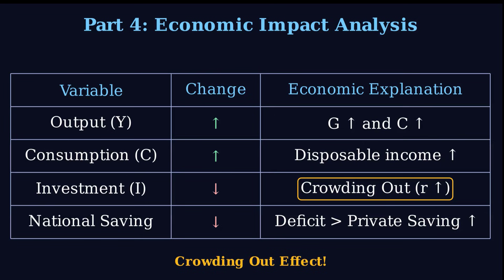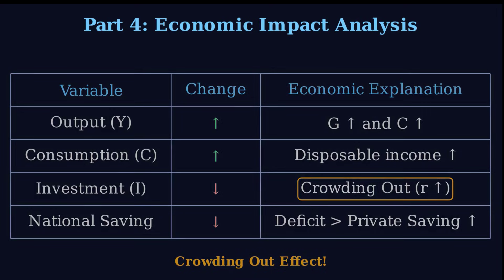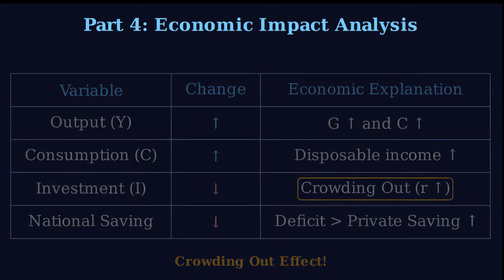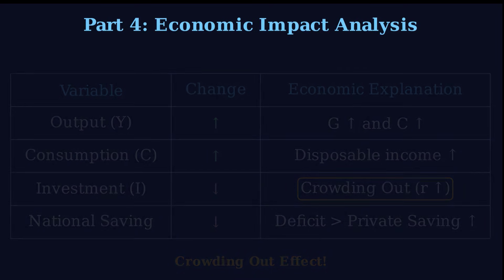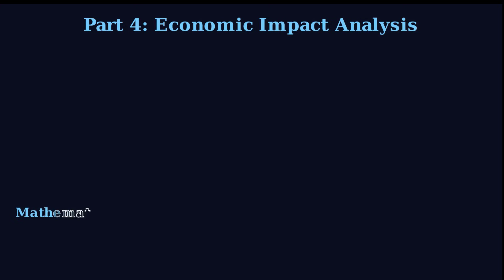The expansion of public sector spending effectively displaced or crowded out a certain amount of private investment. So while total output Y is up, the gain is actually smaller than it could have been, because the rise in G was partially canceled out by the fall in I. It's not a free lunch — it's a shift of resources from one use to another.